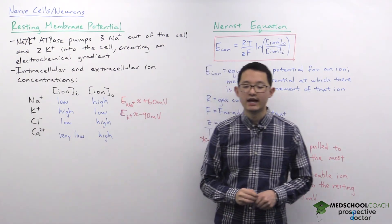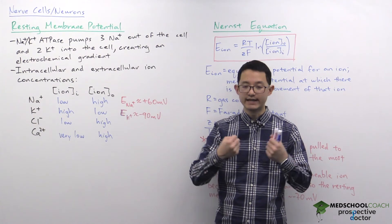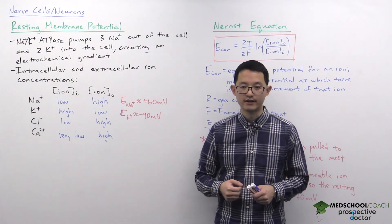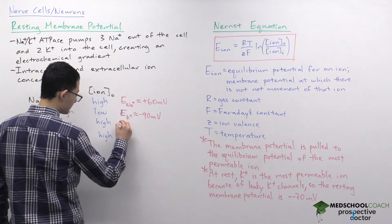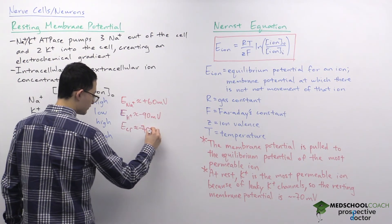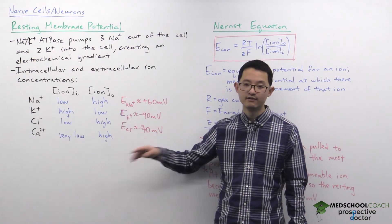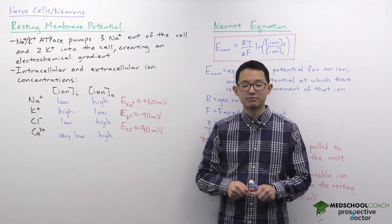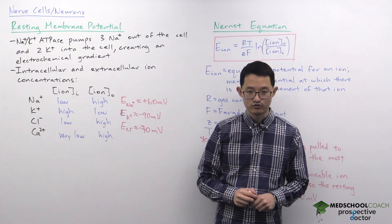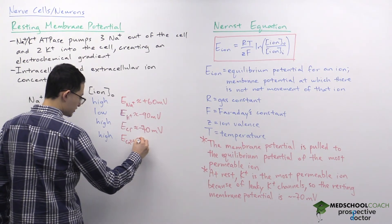For chloride: it has a high concentration outside and low inside, so it wants to move into the cell. To prevent negatively charged chloride from entering, we want the cell to be negative to repel it. So chloride has a negative equilibrium potential of approximately negative 70 millivolts. For calcium: it has a high concentration outside, so it wants to enter the cell. To prevent positive calcium from entering, the cell must be positive — and because the concentration gradient is particularly large, calcium has a very large positive equilibrium potential.